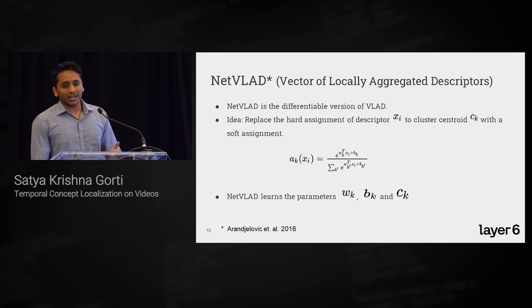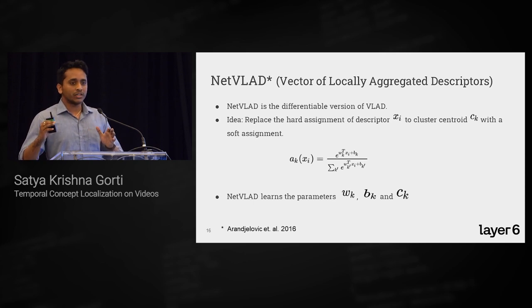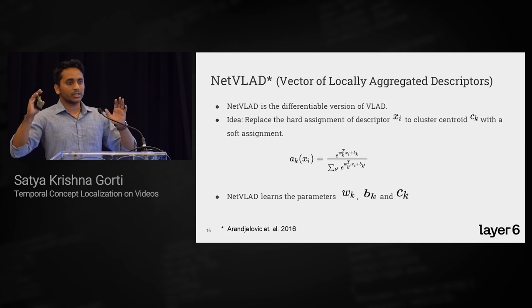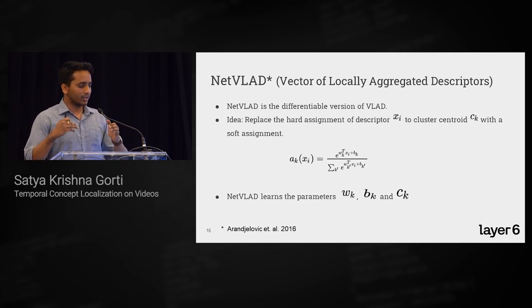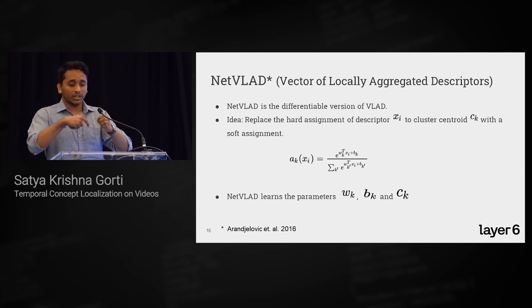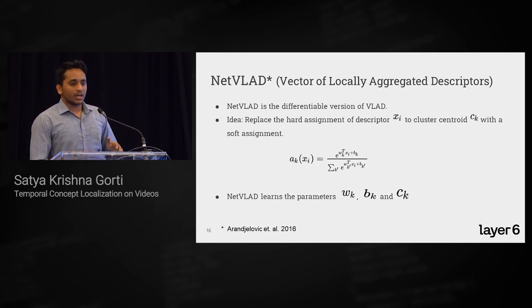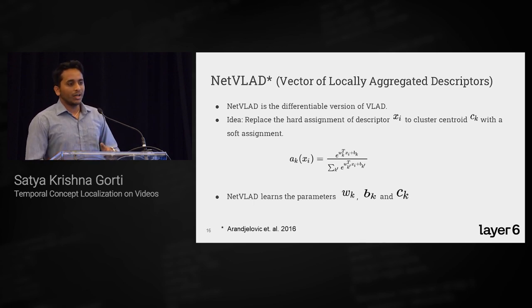In Vlad, features are distances from cluster centroids, aggregated together. These form very good features, but Vlad is not differentiable because of hard assignment. NetVlad tries to replace the hard assignment with a soft assignment and learn the cluster centroids and the parameters of these soft assignments jointly.